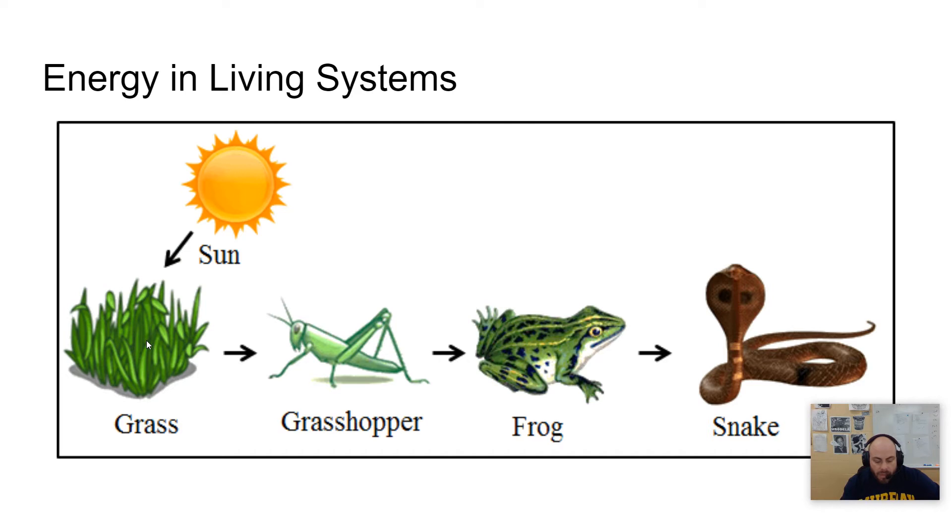But at each new level, those living systems must gather molecules, whether it be from the air if you're grass, or from the things that you've eaten, to build new molecules for themselves. And energy is needed to then break down those molecules and build up new molecules.